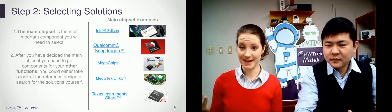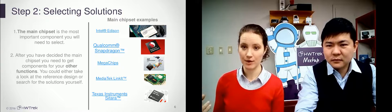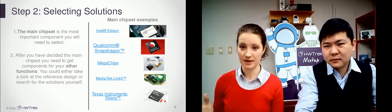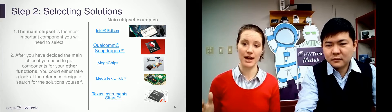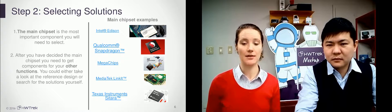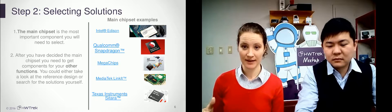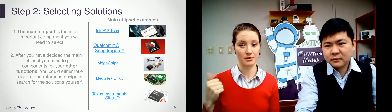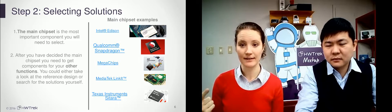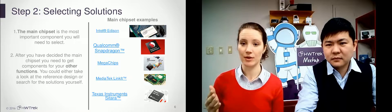When you have decided on your main chipset, the next step is selecting electronic components for your other functions. To minimize the sourcing effort, you can actually look at the reference design of your main chipset, and there are going to be components that are recommended for your chipset. But sometimes these components are too costly or not exactly what you need for your device, so in that case you would need to find the components by yourself.